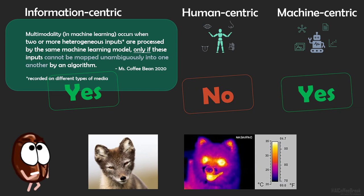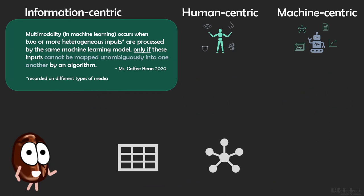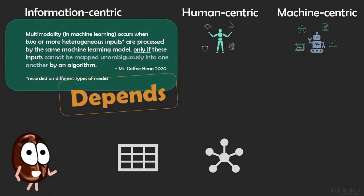One more example. Are a graph and a table the same modality? Well, in the information-centric view, it depends what kind of graph and what kind of table. If the graph can be one-to-one converted to the table and the table into the graph, like a graph and an adjacency matrix, then they are the same modality. If the graph is a social connectivity graph and the table is containing healthcare data of the people in the graph, then they are different modalities.